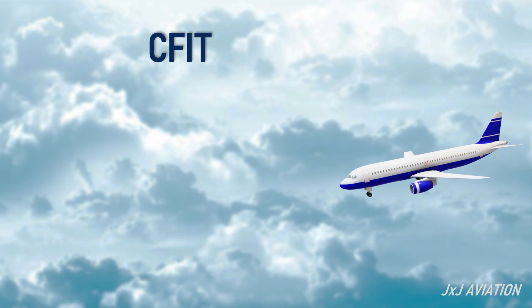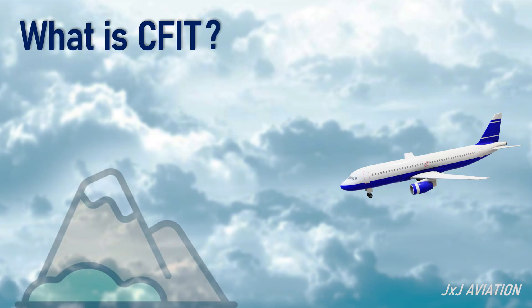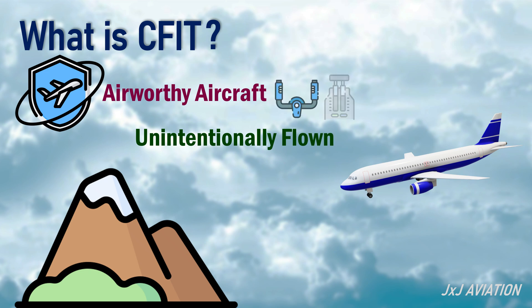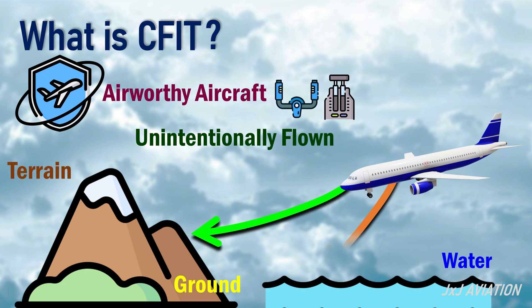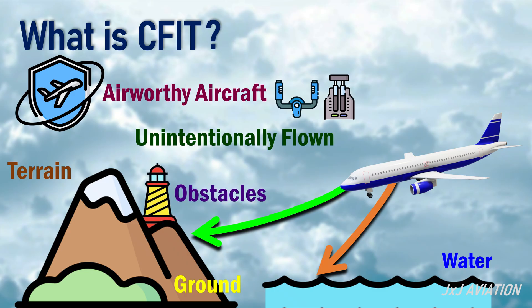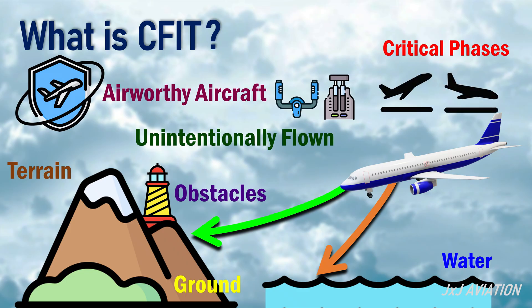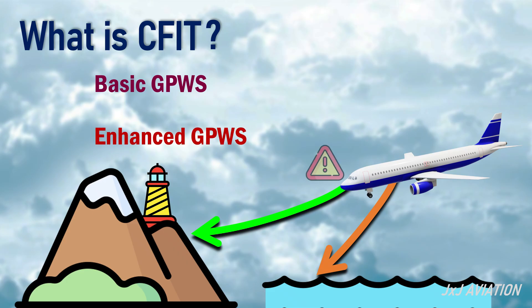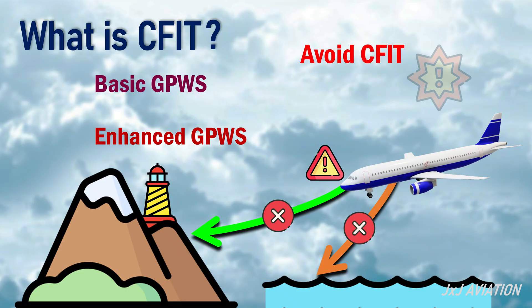What is CFIT? CFIT incidents happen when an airworthy aircraft is unintentionally flown into terrain, ground, water, or obstacles. CFIT accidents usually occur in the critical phases of flight, that is takeoff and landing. The basic and enhanced GPWS create awareness of terrain or obstacles on an aircraft's flight path for avoiding CFIT accidents.